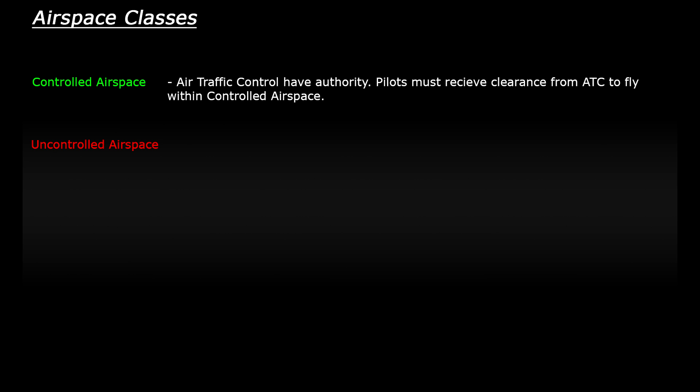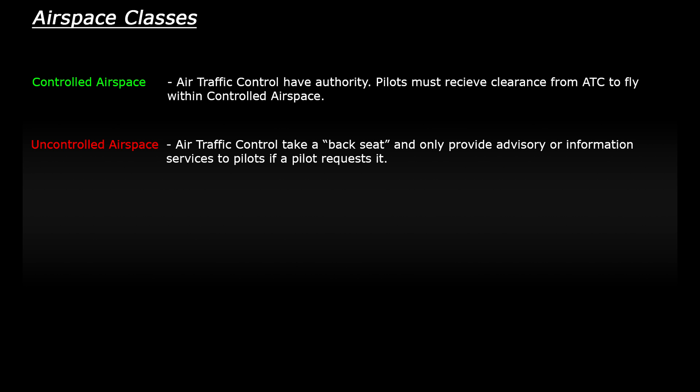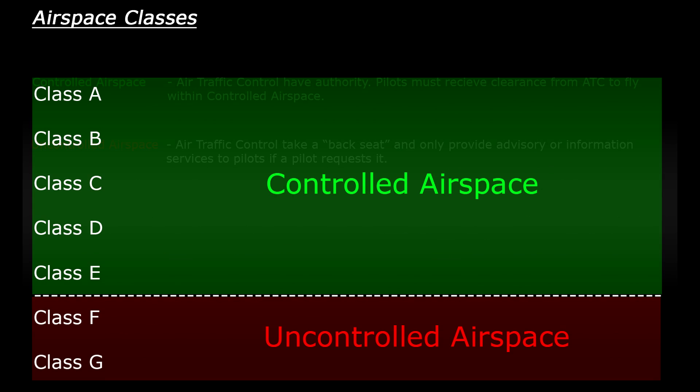Controlled airspace is an area of sky where air traffic control have authority — they give instructions like 'cleared for takeoff' and 'clear to land'; ATC are in charge and controlling the planes. Uncontrolled airspace is the opposite. Air traffic control are present but act more as an advisory service — they can give weather updates, for example, if a pilot requests them. Classes A to E are within controlled airspace, and classes F and G are uncontrolled.